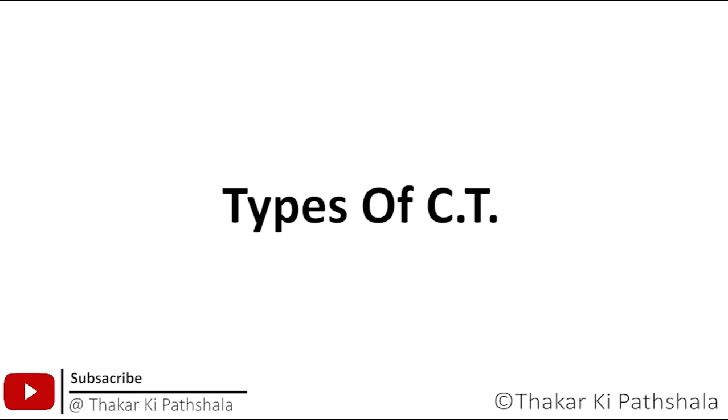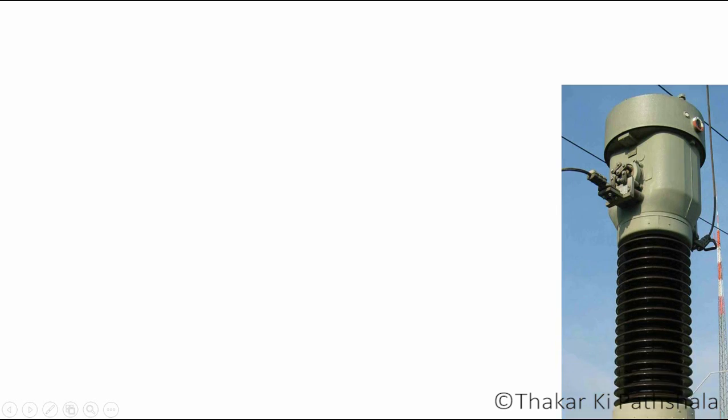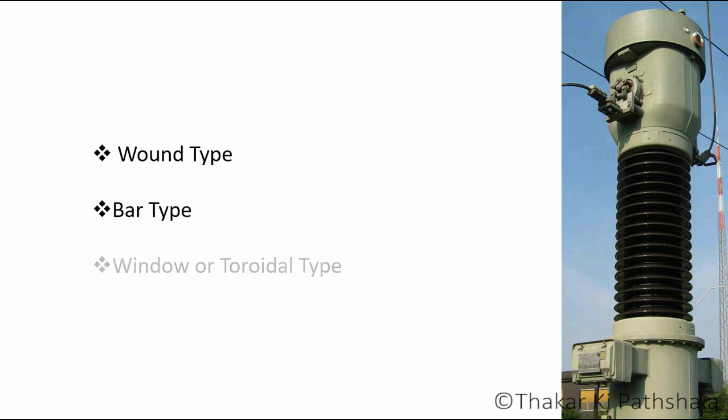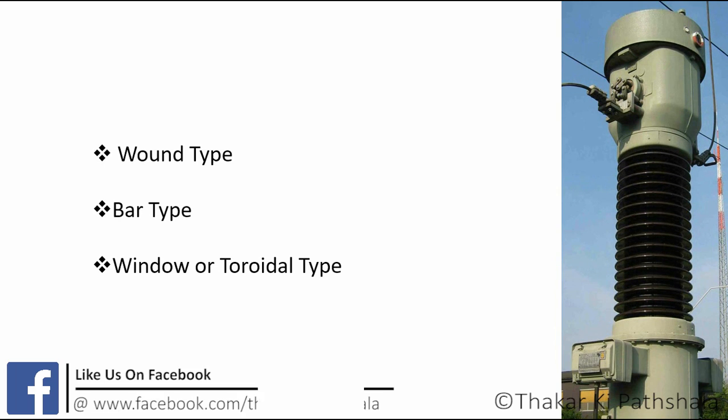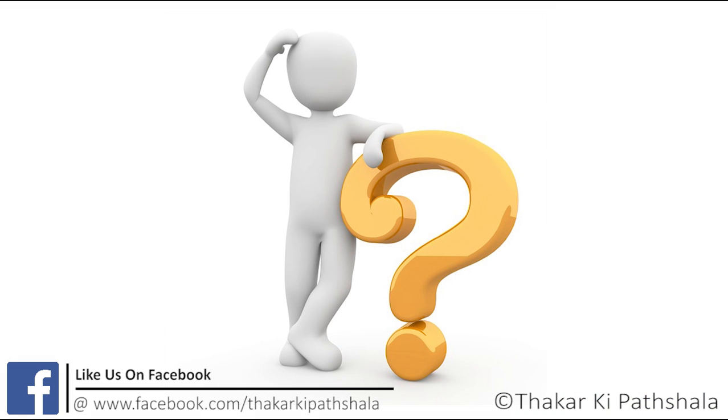First of all we will see types of CT. There are basically three types of CT available in market. First one is wound type, second is bar type and third is window or toroidal type. So what's the difference between them?